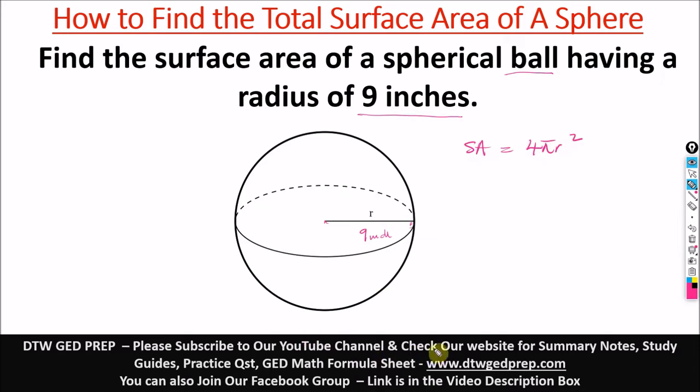So here we have 4, and your pi will always be given as 3.14. If it's not given, you can just leave it in the formula that way. Times 3.14.